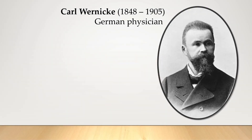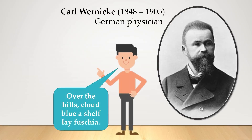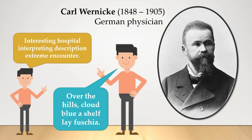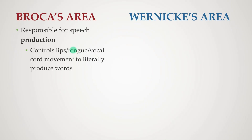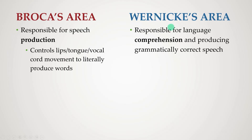Broca's findings initially received some criticism because the idea of a single area of the brain being responsible for certain behaviors had not yet been accepted. Further support came just 12 years later, in 1873, when German physician Wernicke studied patients who were able to produce fluent speech but that made no sense — they also couldn't comprehend language. These patients were found to have brain damage at another specific spot, right here in the left temporal lobe, which became known as Wernicke's area. Broca's area is now thought to be the speech production region, literally controlling lips, tongue, and vocal cord movement, while Wernicke's area is primarily responsible for comprehension and the production of grammatically correct speech.